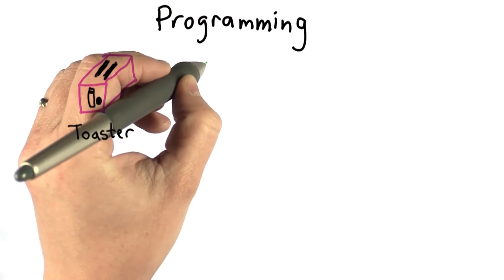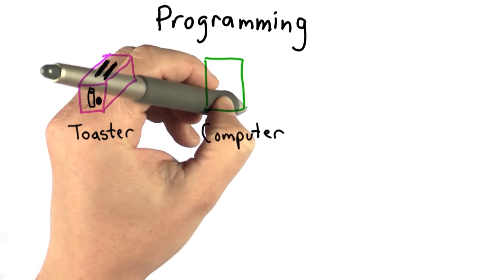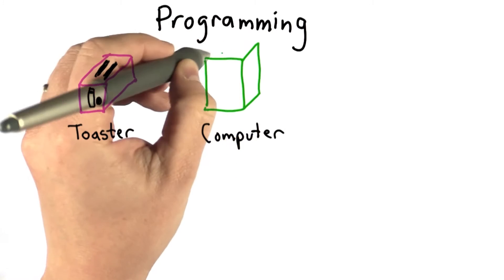Without a program, a computer is even less useful than a toaster. It can't do anything without a program. The program is what tells the computer what to do.